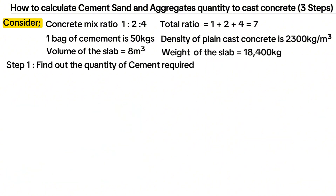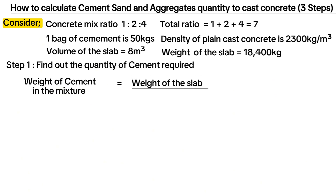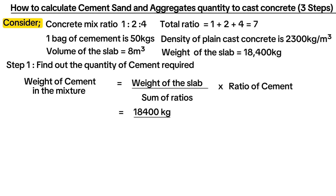Step one is to find out the quantity of cement required. The weight of cement in the mixture is equal to the total weight for the whole slab divided by the sum of ratios, multiplied by the ratio of cement. This gives us 18,400 kilograms divided by 7, multiplied by 1, to get 2,628.57 kilograms.